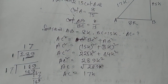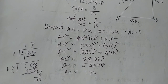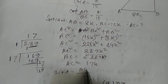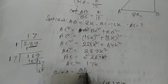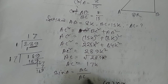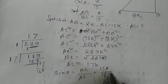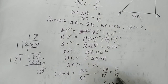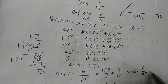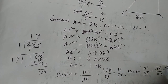Now I'm going to find sin A and sec A. Sin A is equal to BC by AC — kk cancels, giving 15 by 17. Sec A is equal to AC by AB — that is 17k by 8k, kk cancels, giving 17 by 8.